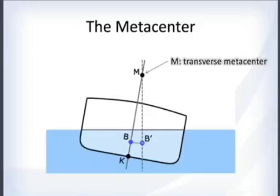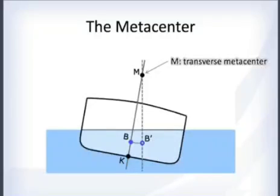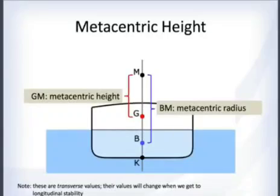The center of that circle is called M, the transverse metacenter. This is not a physical point on the ship — it is just a property of the ship, an imaginary point high up about which the ship rotates for small angles.